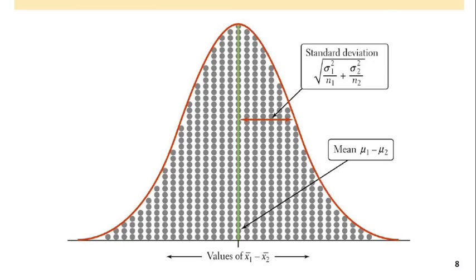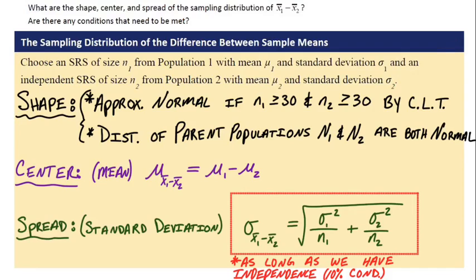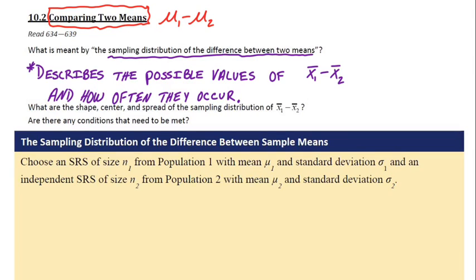So we talked about sampling distributions for comparing two means, mu1 minus mu2. That is all for now. I'll see you in class.